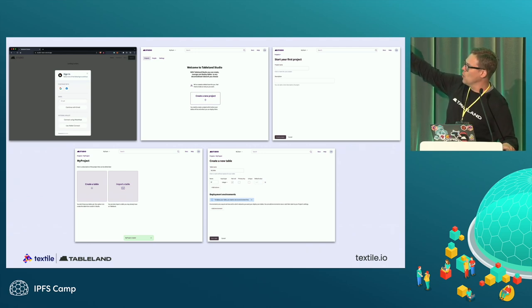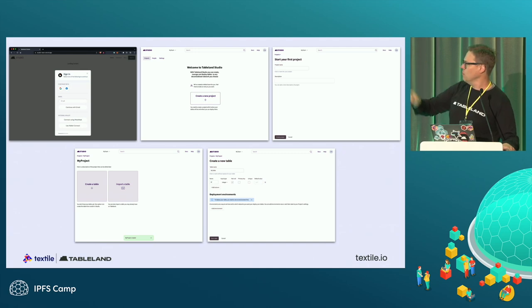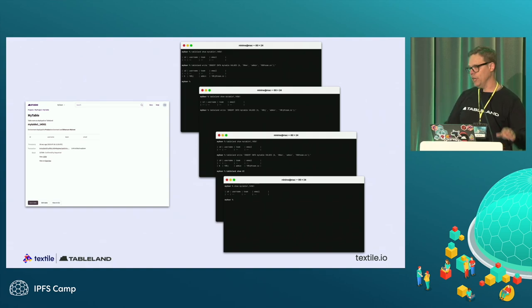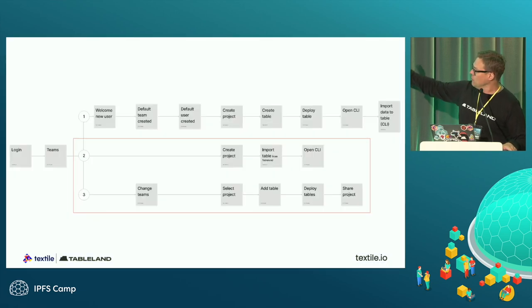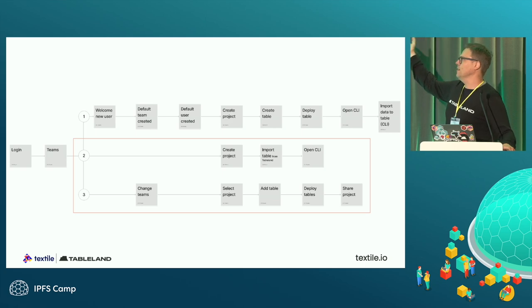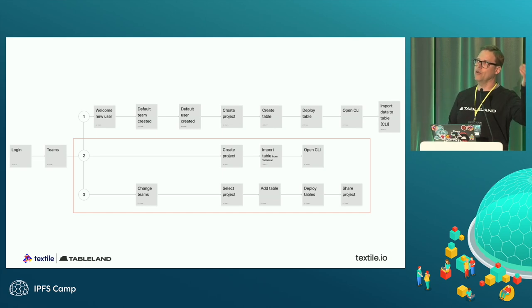We're looking at how we can get them in quick — maybe some kind of abstracted single sign-on and a really stripped-down UI. Can they understand how to create a table? Can they deploy it? Then they go back to the CLI to import stuff. We tested two other scenarios: creating a project and importing from Tableland — you can use any table on Tableland in your project — and then going back to the CLI again to test how big a part of the experience that really is. We also tested changing teams and other basics.